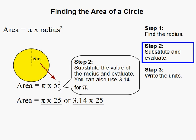So I wrote it both ways. I did 5 squared times pi like this. Or instead of writing the pi symbol here, I wrote 3.14 times 25. So either way.